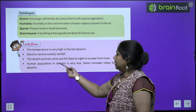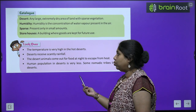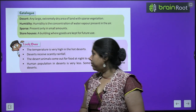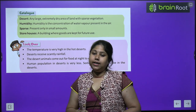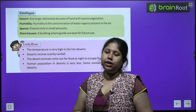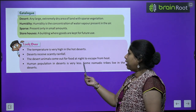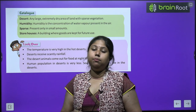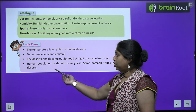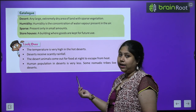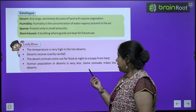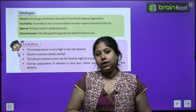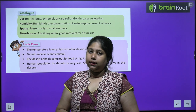Important points from this chapter: The temperature is very high in hot deserts. Deserts receive scanty rainfall. Desert animals come out for food at night to escape the heat. Human population in deserts is very less — kuch nomadic tribes jo ek jagah se doosri jagah bhatakti rehti hain, yahi deserts mein payi jaati hain.